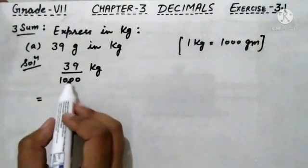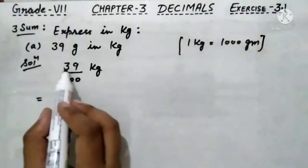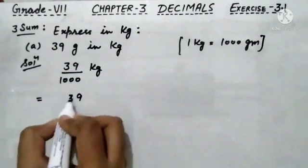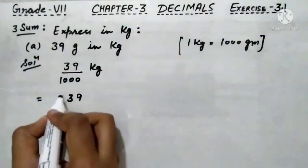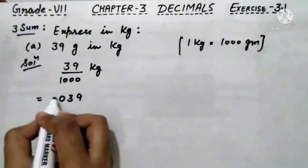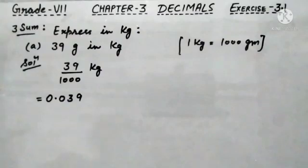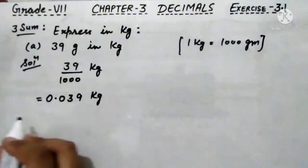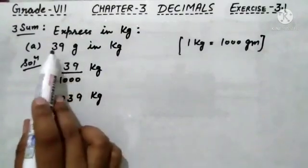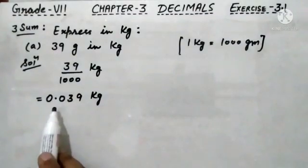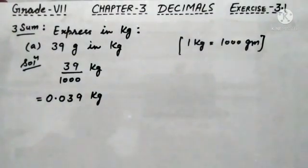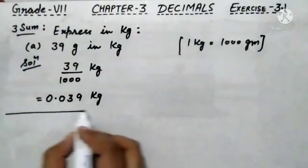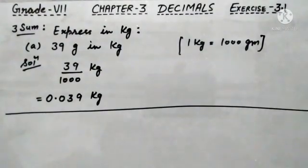Here, 3 zeros are given in the denominator but only 2 digits are given — 9 and 3. The third digit is not there, so we write a 0, then place a decimal, and then write 0. So this number can be written as 0.039 kilogram. That is the conversion of 39 gram into kilograms. The B part of the third sum you can solve yourself using this same conversion. This is the required answer of third sum A part.